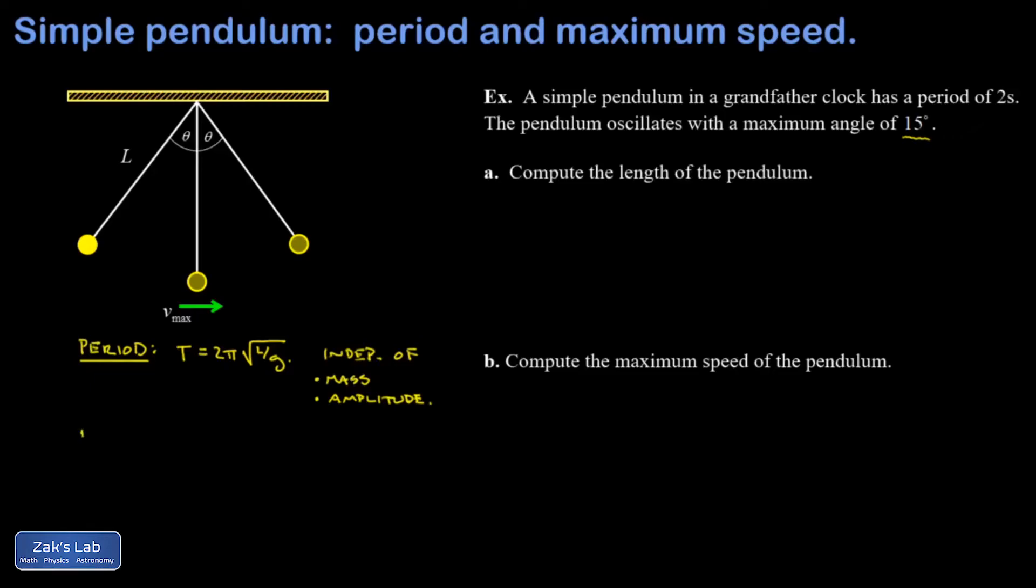The second point I want to make in this video is about energy issues. What's going on in terms of energy with a simple pendulum is that at this maximum angular displacement, all your energy is gravitational potential. And then it transforms into kinetic where it's purely kinetic by the time I get to the maximum speed at the bottom of the trajectory.